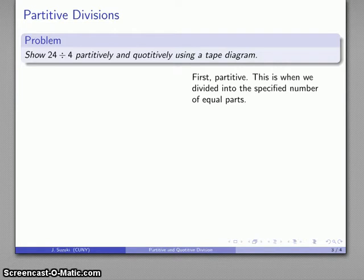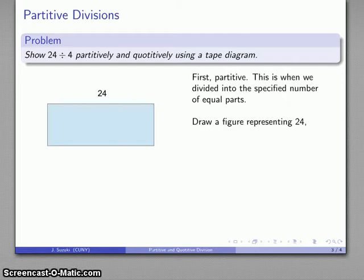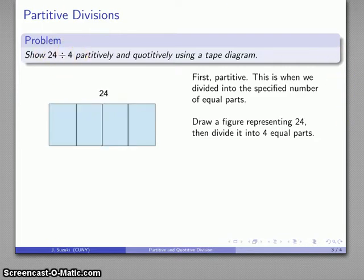With the partitive division, I'm going to take a tape that represents 24, and I'm going to break it into 4 equal pieces. So there's my tape representing 24. I'll break it into 4 equal parts. And my question is how big each part is going to be.